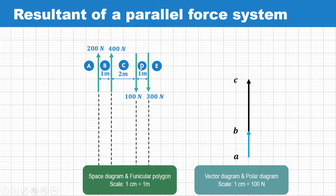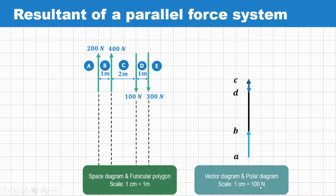CD is a 100 Newton force, so 100 divided by 100 gives 1 centimeter. DE is a 300 Newton force, giving 3 centimeters, and DE is in the downward direction.